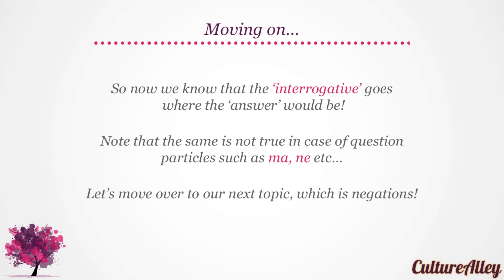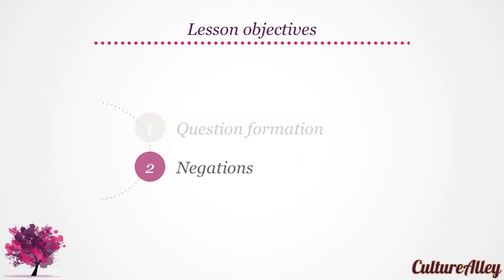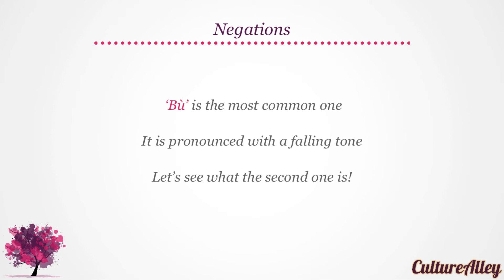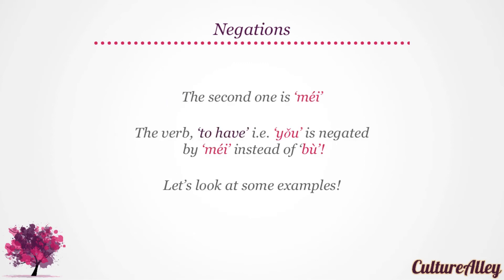Now let's move over to our next topic, which is negations. To start off with, there are two ways of saying no in Mandarin. The most common one is 不, which is pronounced with a falling tone — we're already familiar with this one. The second one is 没, pronounced with a mid-rising tone. The verb to have, 有, is negated by 没 instead of 不. Let's look at some examples.